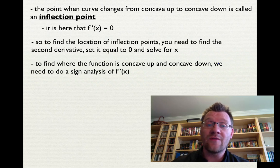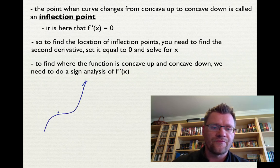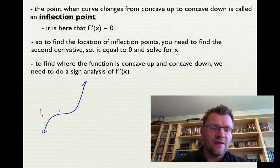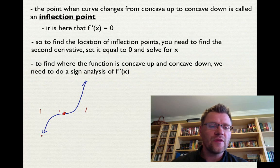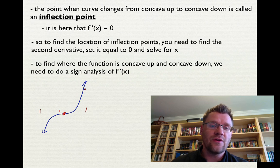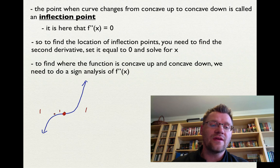To find where the function is concave up and concave down, we do a sign analysis. Consider a function that is concave down from the left all the way to a middle point, then changes to concave up — that middle point is an inflection point where the second derivative equals zero. So even if a function is increasing the entire time, there can still be an inflection point where it changes from concave down to concave up. A sign analysis of the second derivative tells us exactly where each type of concavity occurs.